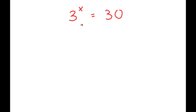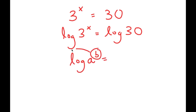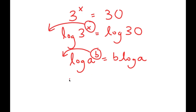To solve this equation, I'm going to start by taking the log on both sides, so I get log of 3 to the power of x equals log of 30. If I have something in the form log a to the power of b, I can move the exponent b to the front, so it turns into b times log a. In this case I have log 3 to the power of x, and I can move x to the front, so I get x times log 3 is equal to log 30.